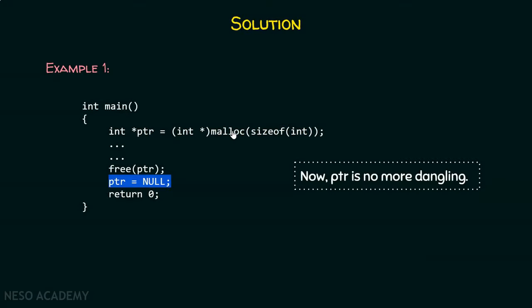What is the solution for this problem? The solution is simple — just re-initialize the pointer. Here in this case, PTR has been initialized with null. This is the simplest possible step: just initialize the pointer with null. Now PTR is no more dangling. Dangling pointers cause problems later in your code — if you free the memory and then try to dereference the pointer to access contents from that location, that location simply doesn't exist. So to avoid such problems, we need to re-initialize the pointer after freeing the memory. This is a very important step.